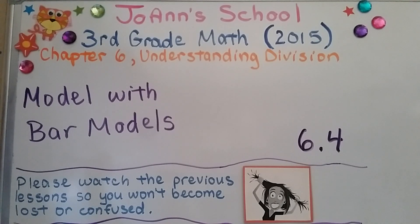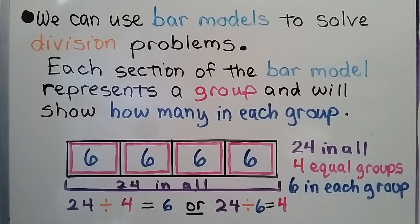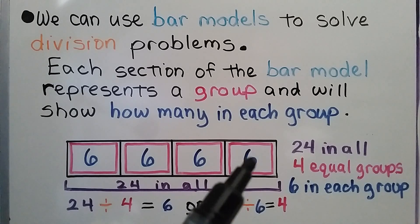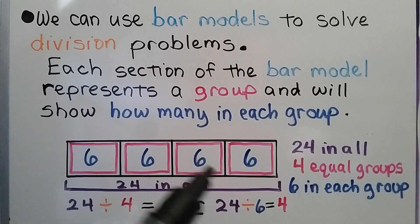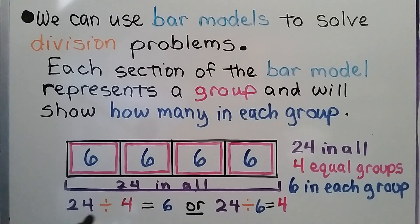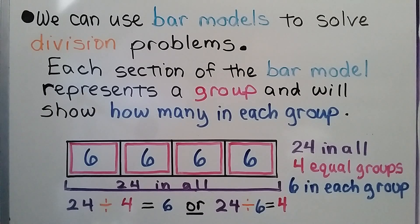Lesson 6.4 - we're going to model with bar models for division. We can use bar models to solve division problems. Each section of the bar model represents a group and shows how many are in each group. We can see that there are 24 in all, with four equal groups of six. 24 divided by four groups equals six in each group, and 24 divided by six in each group equals four equal groups.